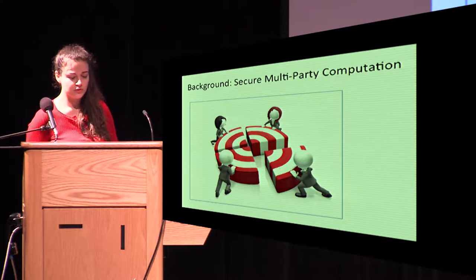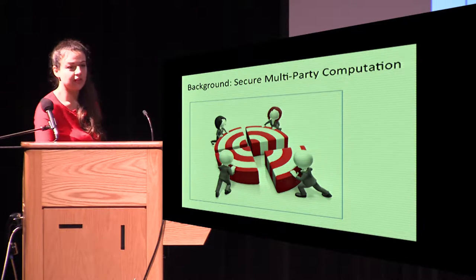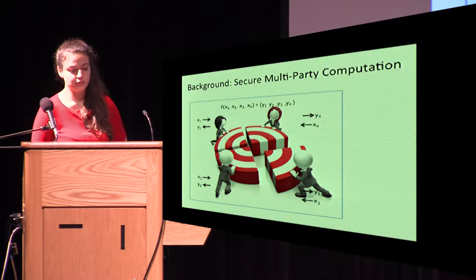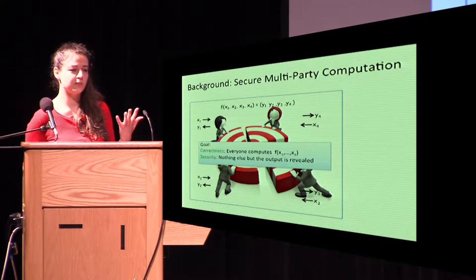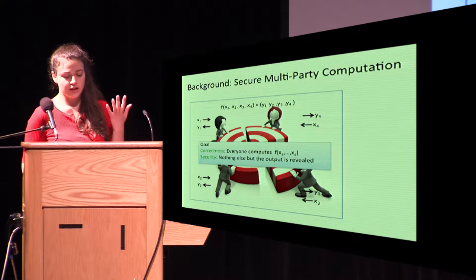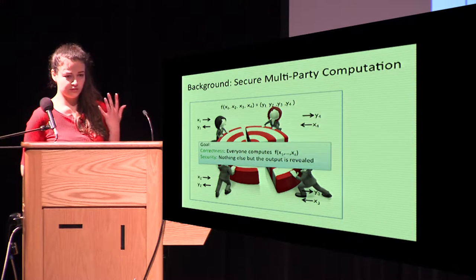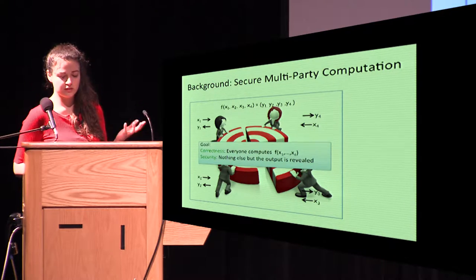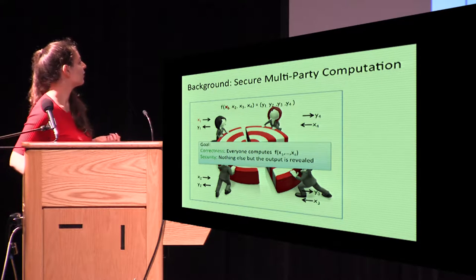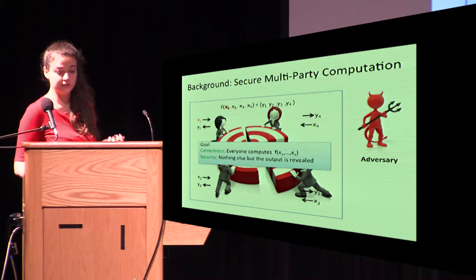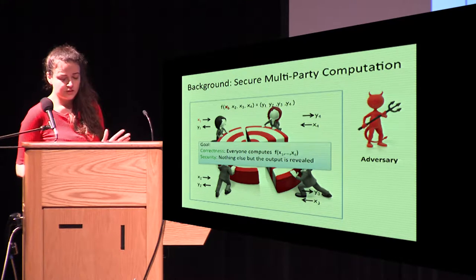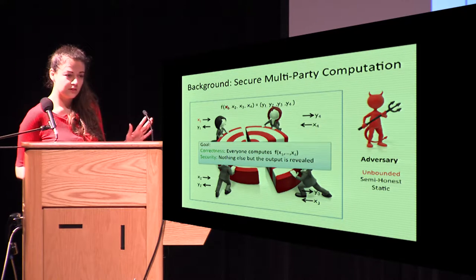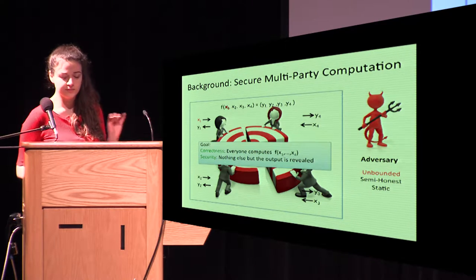Secure multi-party computation allows a set of parties to jointly compute a function on their inputs such that honest parties receive the correct output and only the output information is leaked. We want this to hold in the presence of an adversary who can arbitrarily corrupt parties. In our case, the adversary is unbounded — we are in the information-theoretic setting, semi-honest and static.